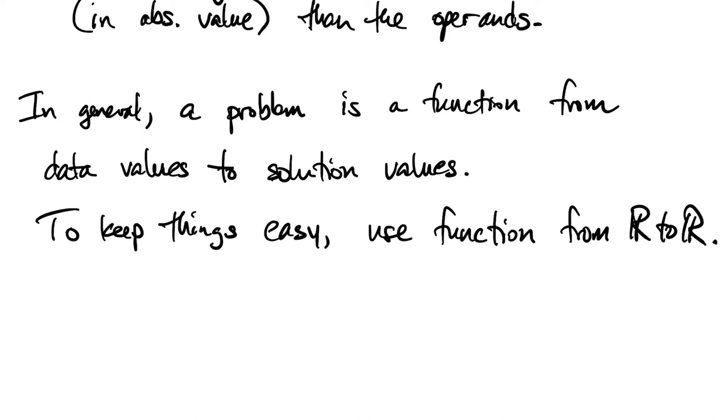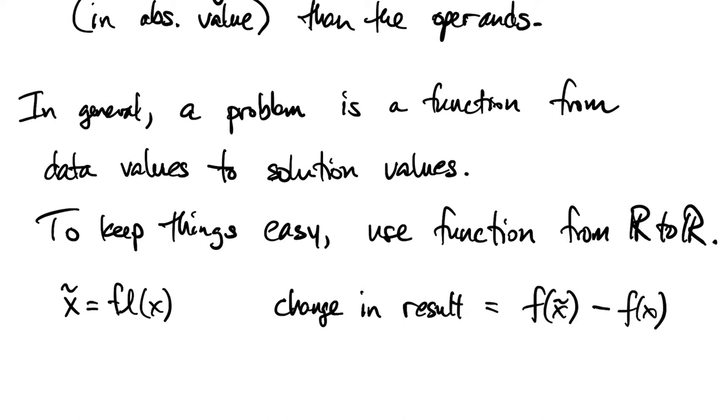So now let's say we have our exact data x, and we're going to perturb that to a floating point value. So we'll now call that x tilde. So x tilde is the perturbed value of the data. And then that leads to a change in the solution, which is just the difference between f at x tilde and x. So to get the relative change in the result, we divide that change by the original f of x.